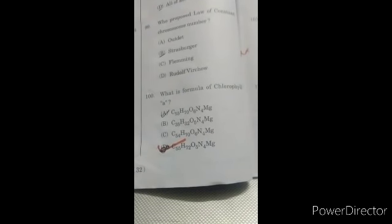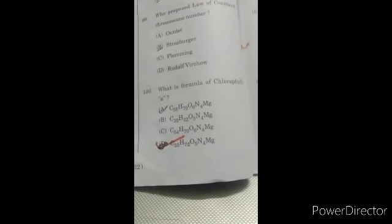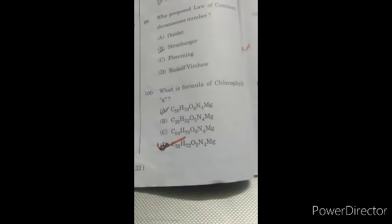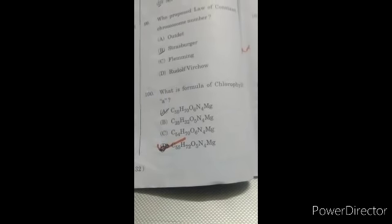Question 100: formula of chlorophyll A. This is D option: C55H72O5N4Mg, magnesium.